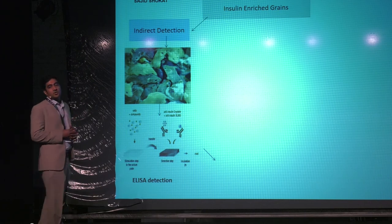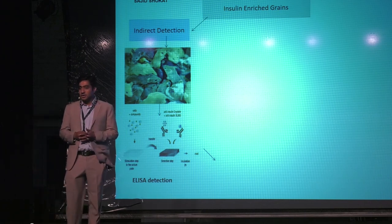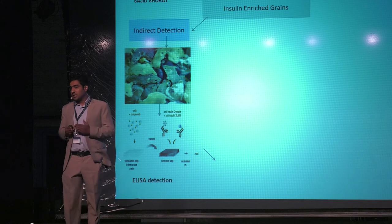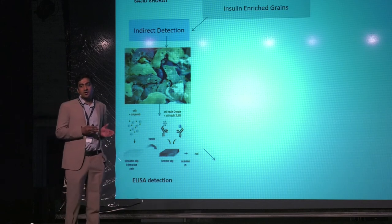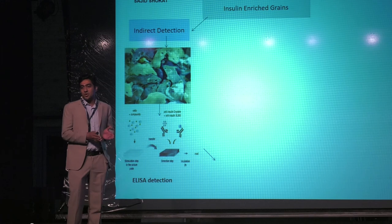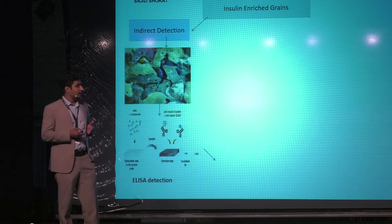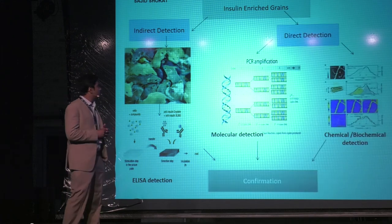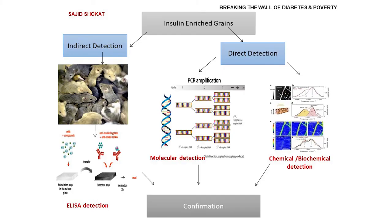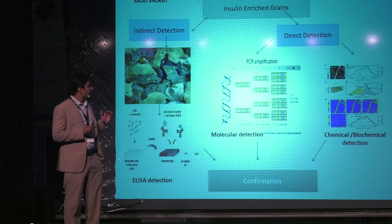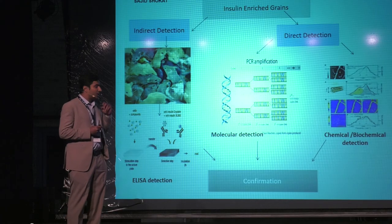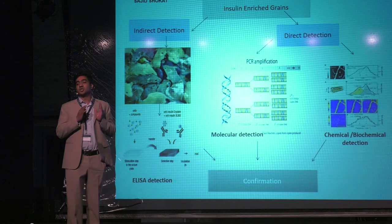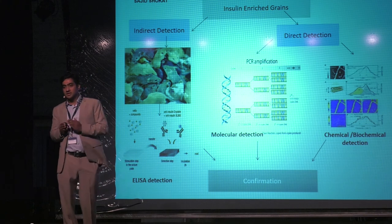We can test these grains in mice which are deficient of insulin, and check their blood samples to see whether this gene is present and working within their body. We can also test through direct detection — grinding the grains into powder and detecting through molecular means whether this gene is present. Similarly, we can detect through biochemical or chemical detection, and also check the quality parameters of the grains.